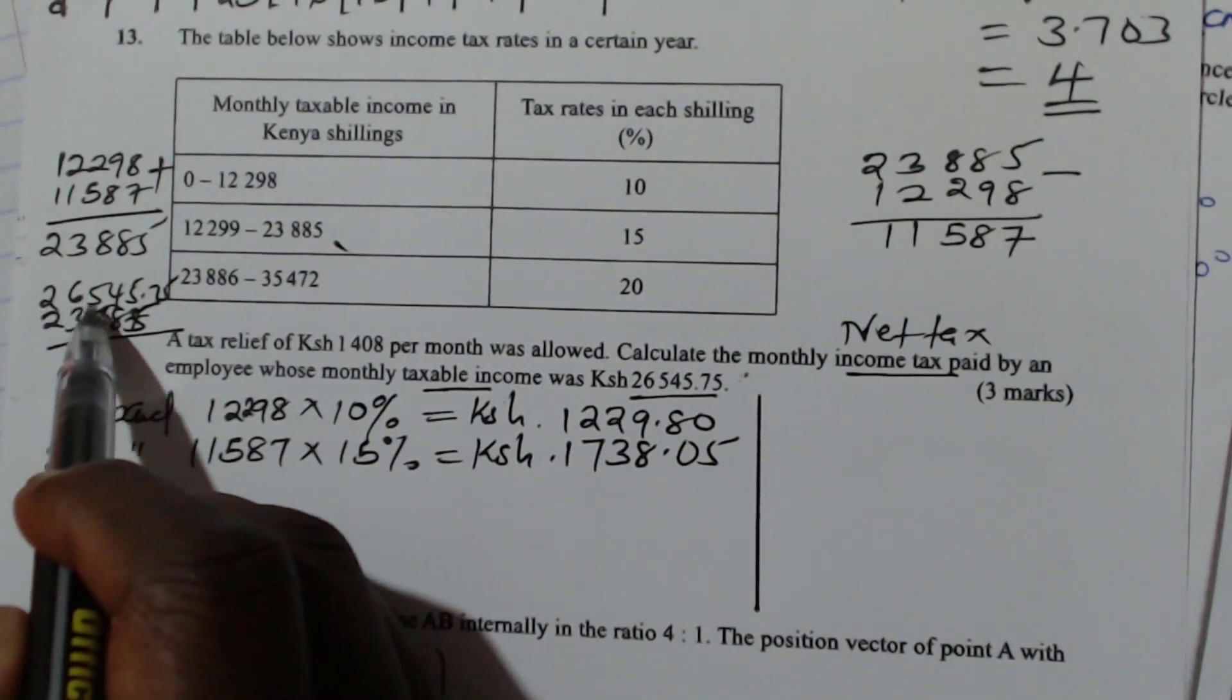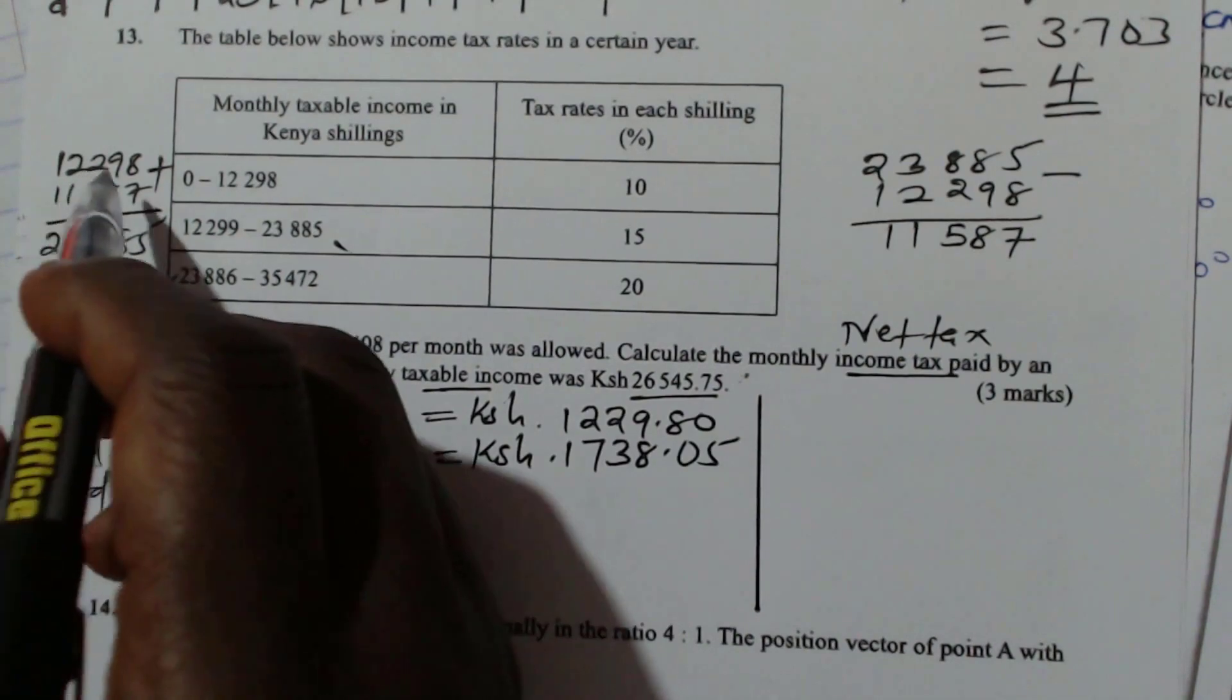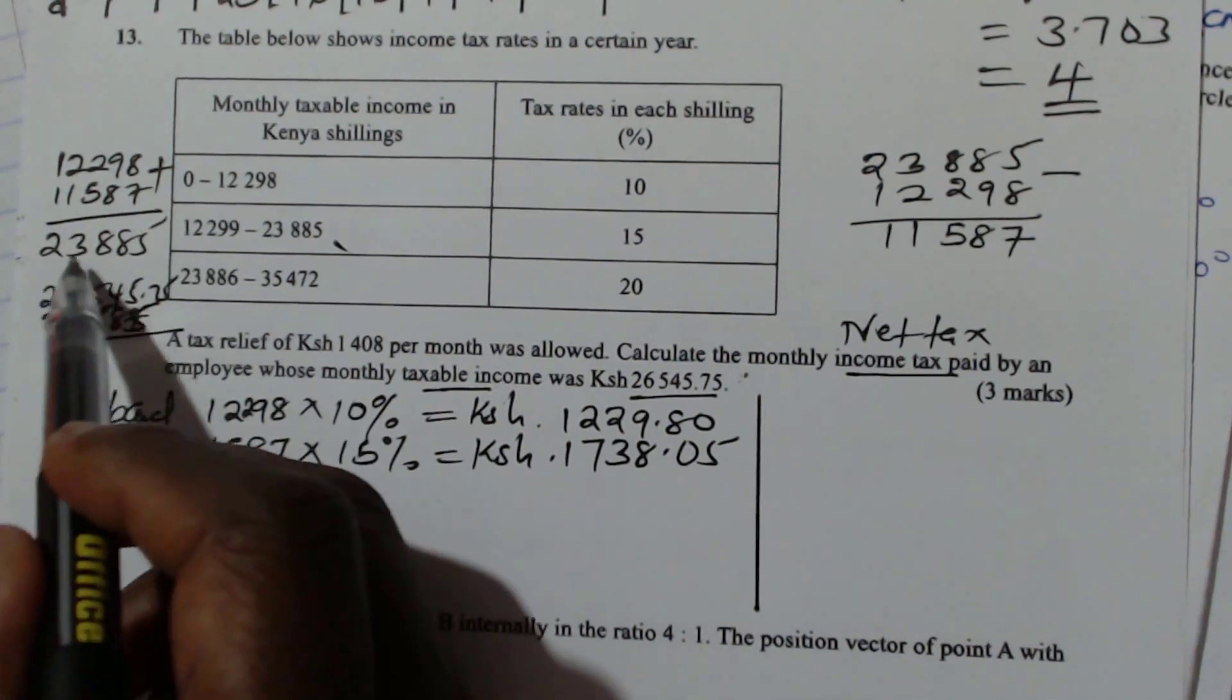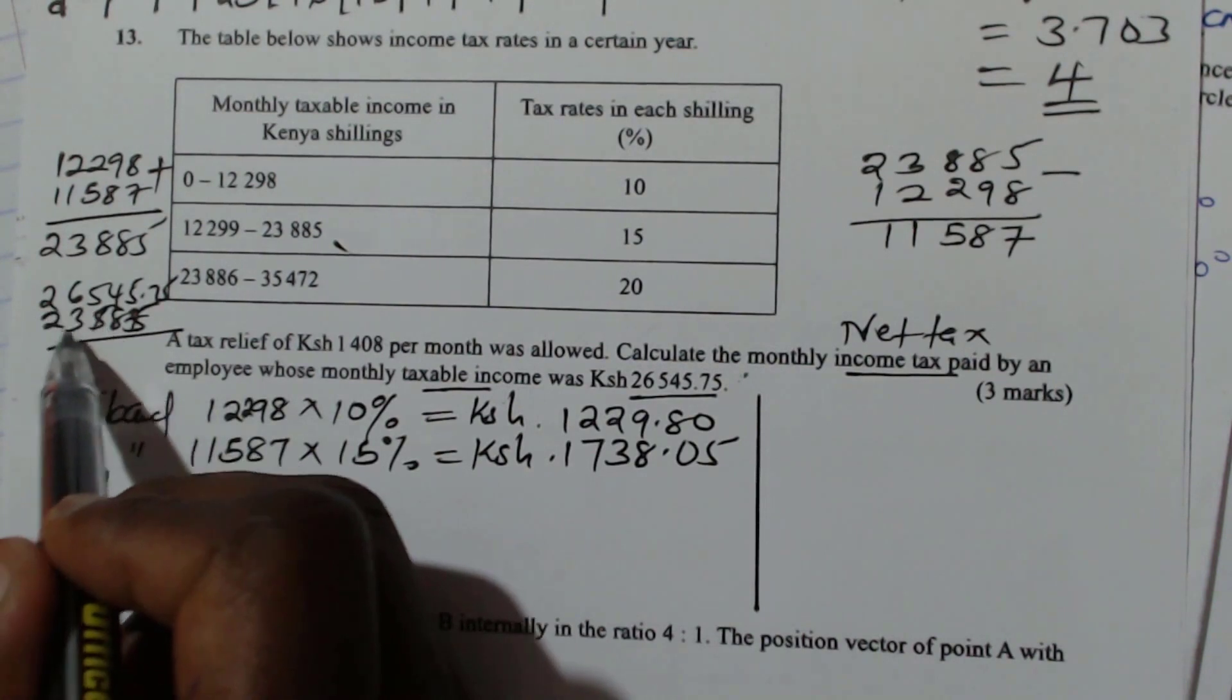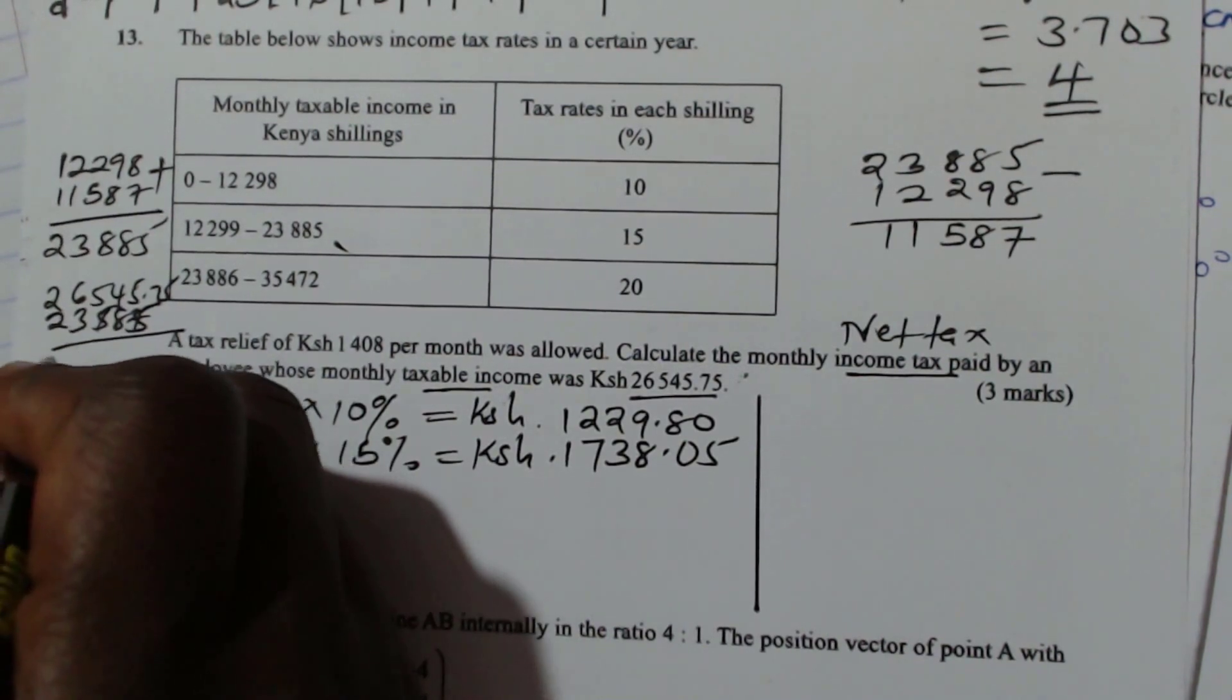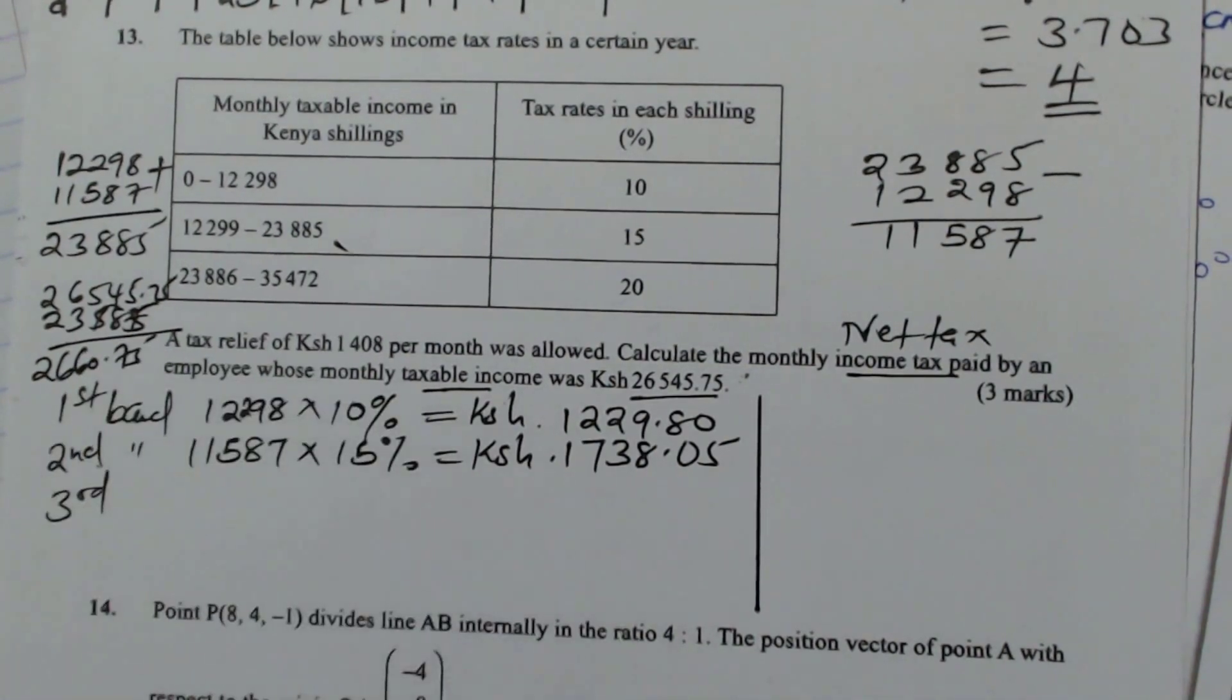So we take 26,545.75. Then whatever we have added and taxed so far is 12,298 plus 11,587. We have 23,885. So when you get the difference here, we will get 2660.75.